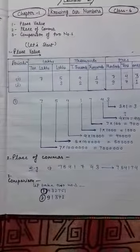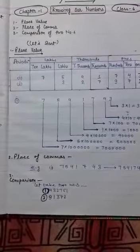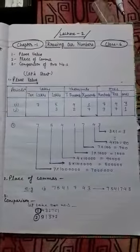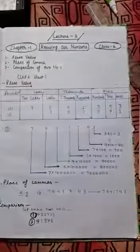Hello students, today this is class 6 second lecture of chapter knowing our numbers. Today we will discuss these three topics: first is place value, second is place of comma, and third is comparison of two numbers.